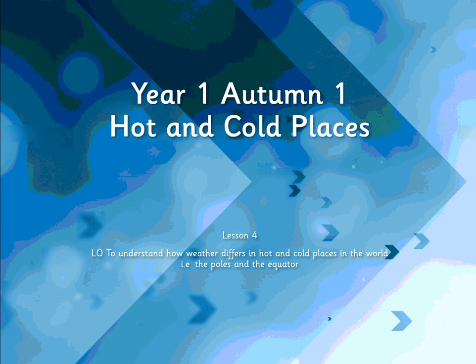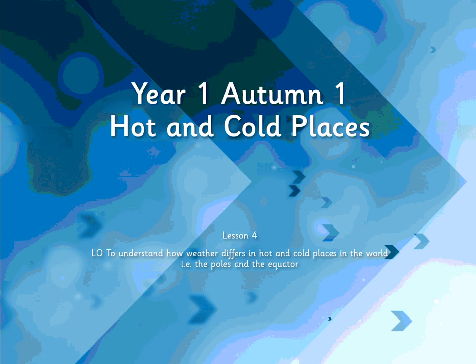Good morning Year One and welcome to our fourth lesson on geography. Today we're going to be doing some map work and finding out where hot and cold places are and how they differ. Some of this has been taken from a Twinkle resource and some has been created by me. You're going to have a task at the end where you'll be colouring in blue and yellow where you think the hot and cold places are in the world, or alternatively you can work with a grown-up and point to a map or globe to identify where hot and cold places are.